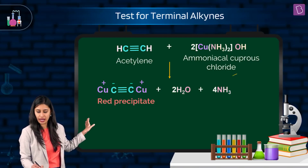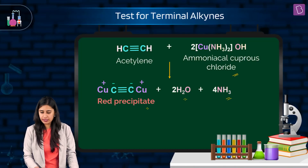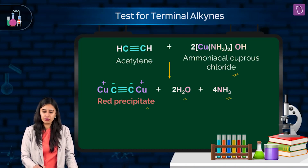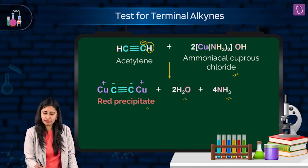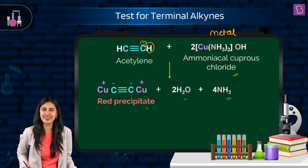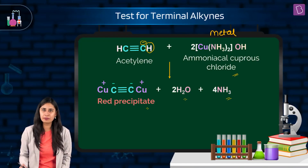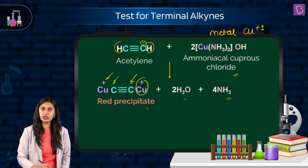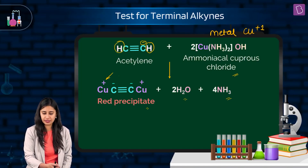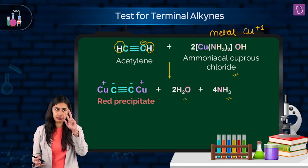Acetylene with ammoniacal cuprous chloride gives a red ppt along with two moles of water and ammonia. Why is this happening? You know that the acidic hydrogen is here, so carbon can carry a negative charge if H⁺ is lost. The moment it is lost, these metals are in the hunt for this kind of situation — a reactive metal with an acidic hydrogen will immediately sit in its place. Copper is in the +1 state, carbon is in the minus state, and you get a red-colored precipitate.